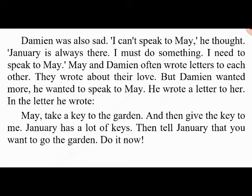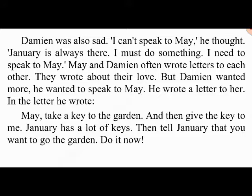He wrote a letter to May: 'Take a key to the garden and give the key to me. January has a lot of keys. Then tell January that you want to go to the garden.' May did what Damien asked — she gave him the key. Then Damien went to the garden and waited there for January and May.